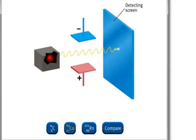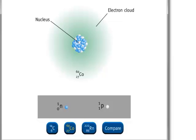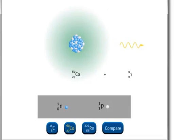A cobalt-60 nucleus contains 27 protons and 33 neutrons. When a gamma ray is emitted, the number of protons and neutrons in the nucleus is unchanged.